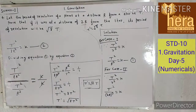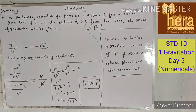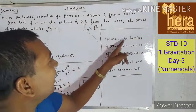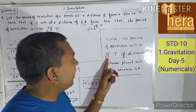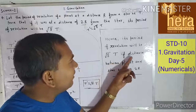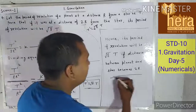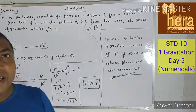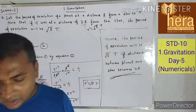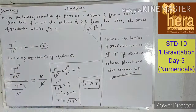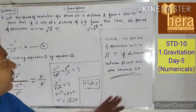Hence its period of revolution will be √(8)·T if the distance between planet and star becomes 2R. In the next lecture we will continue numericals. One more lecture I will take and then I will start the next chapter. Thank you.